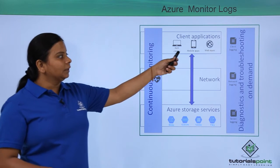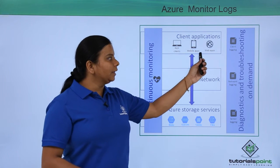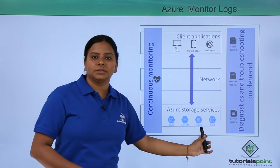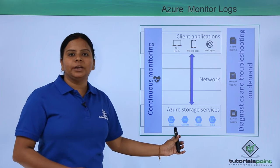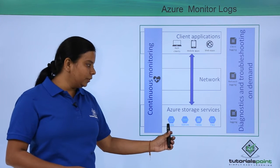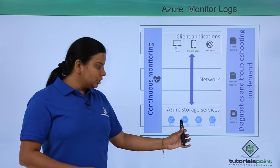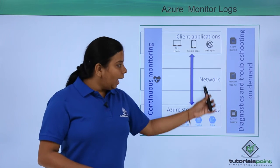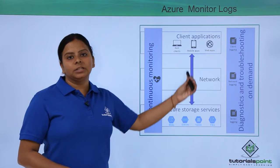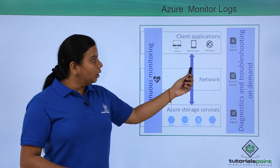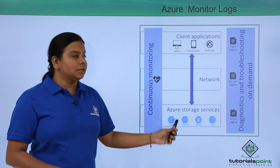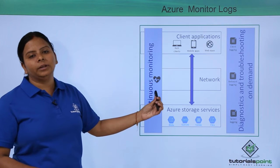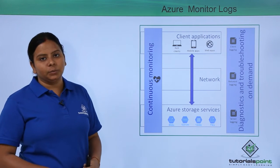Here you can see these are the client applications — your rich clients, your mobile applications, your web applications — deployed over here. These are the storage services where you have storage for these applications in different storages like blob storage, queue storage, table storage, and file storage, with the network in between to connect these resources. Along with these services, you also have a monitoring log which is continuously monitoring each service and device connected.